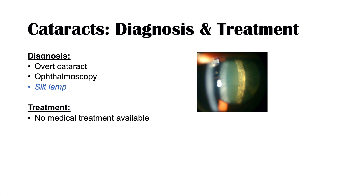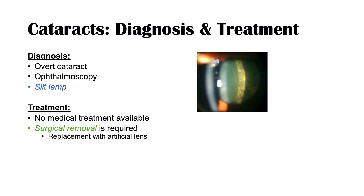There are no medical treatments available for cataracts — surgical removal is required. The procedure involves cutting open the lens capsule and carefully removing the lens. After removing the old lens material, it can be replaced with an artificial lens. There are different types of artificial lenses depending on whether the patient has farsightedness, nearsightedness, or astigmatism. Once a fake lens is in place, it is called pseudophakia — 'phakia' simply referring to the lens of the eye.